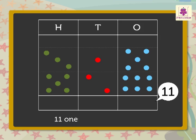Now, we know that 11 ones is equal to 1 ten and 1 one. We can represent 10 blue dots as 1 red dot. So, we regroup 11 ones as 1 red dot and 1 blue dot.